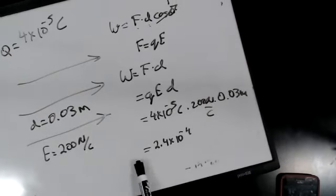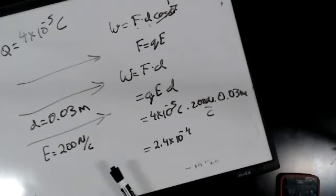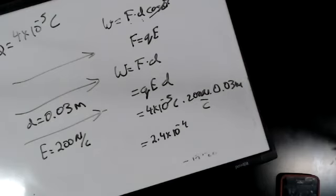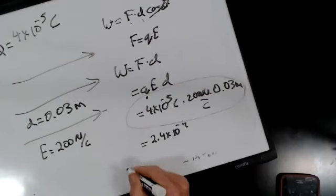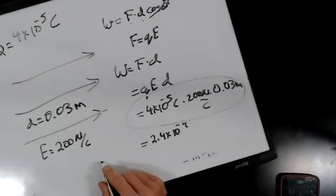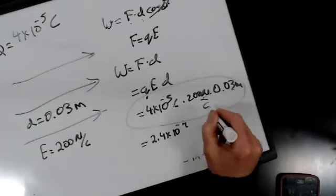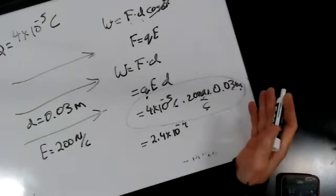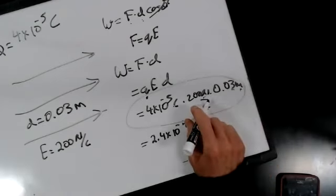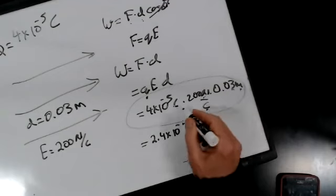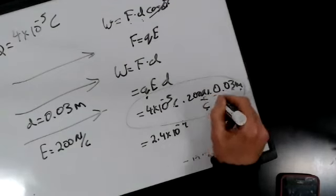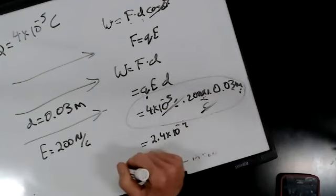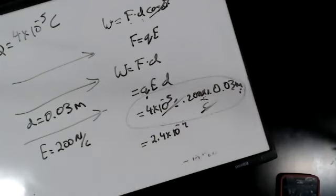You guys are all science people and you know your units. You can look at this problem and say: how do I get energy out of this? Work is energy. The only way is to multiply these three numbers together. Joules equals newtons times meters, and you've got to cancel out the coulombs. There's often a real shortcut to figuring out how to solve a problem — just look at the units and figure out what you need to multiply together.